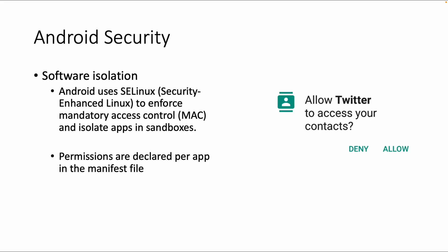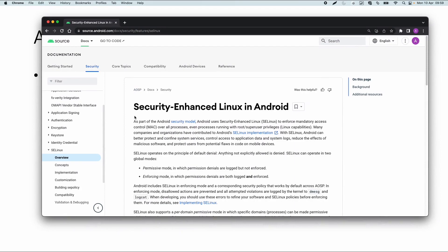The next topic is software isolation, which is part of Android security. Android uses the Linux kernel with a specific kernel version, and also uses Security-Enhanced Linux, which enforces mandatory access control and isolates apps in sandboxes. This is one of the most important security measures for running apps — they cannot leak data outside their sandbox. Permissions are declared per app in the manifest file, which is a very important configuration file every app must have, declaring the permissions the app needs from the user.